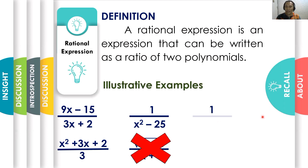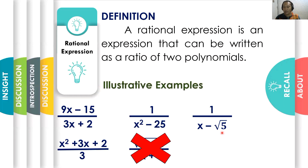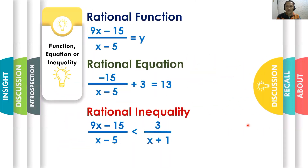What about 1 all over x minus the square root of 5? Here, 1 is a polynomial. For x minus the square root of 5, we observe the radicand for the radical symbol. Our radicand is 5, which is not a variable — it is a constant. Therefore, the denominator is a polynomial, and 1 over x minus the square root of 5 is a rational expression. This concept of rational expression will be utilized when we discuss rational function, rational equation, and rational inequality.